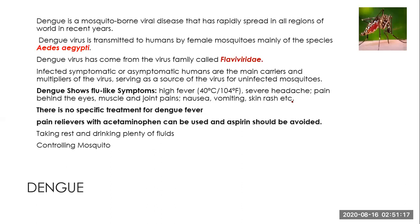There is a disease we can very commonly see or suffer from in our country, called Dengue. It is also spread by a type of mosquito called Aedes. The family responsible for that is called Flaviviridae. Dengue symptoms include flu-like symptoms like fever, nausea, joint pain, vomiting, and skin rash. For Dengue fever, there is no specific treatment. You will take rest, drink plenty of fluids, and strenuous exercise should be avoided when suffering from Dengue disease.